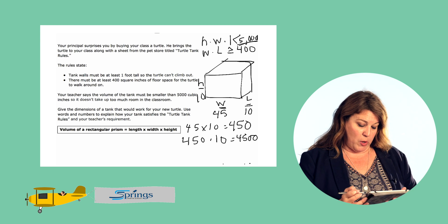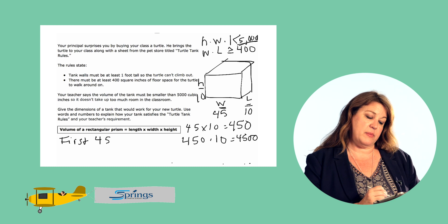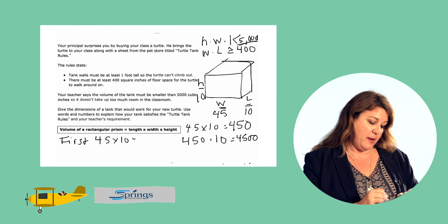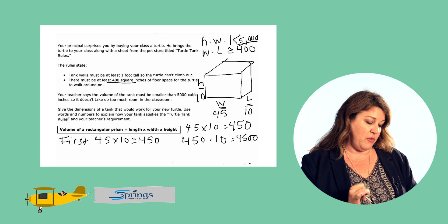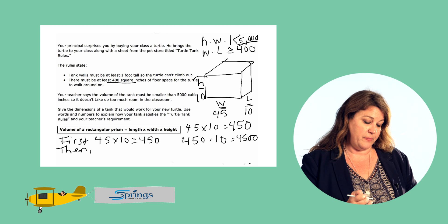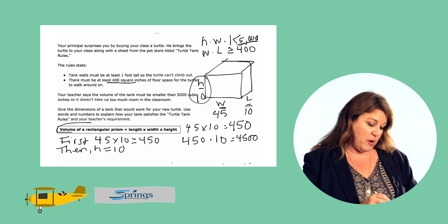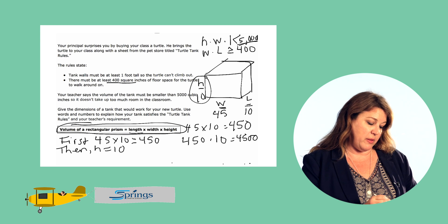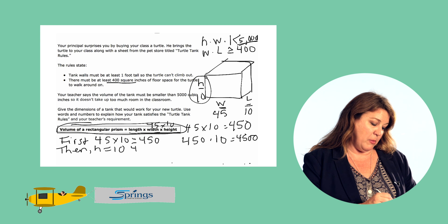So let's explain that using words. First, I chose a width of 45 and a length of 10. That gives me 450 square inches of floor space for the turtle to walk around — that meets the requirement of at least 400 square inches. Then I chose a height of 10 and calculated the volume. The formula says volume of a rectangular prism equals length times width times height. The width times the length is 450, and multiplying by the height of 10 gives us 4,500.